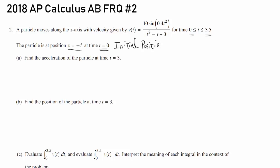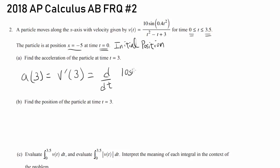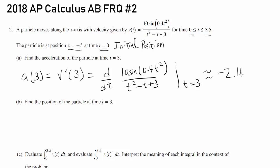Part A: find the acceleration of the particle at time t equals 3. Acceleration at 3 is simply the derivative of velocity at t equals 3, because when you take the derivative of velocity you get acceleration. You can plug this into your calculator right away — differentiate 10 times sine of 0.4t squared over t squared minus t plus 3 at t equals 3 — and you should get negative 2.118. Make sure you round to thousandths or more.